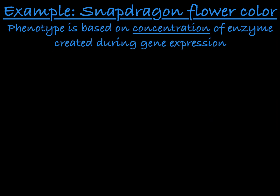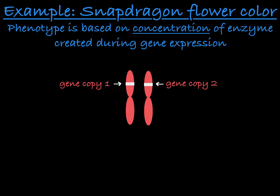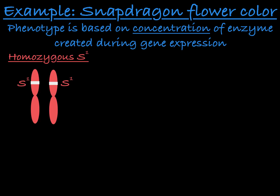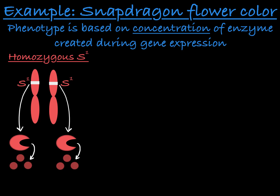So why does this happen? It all has to do with the concentration of protein produced when a gene is expressed. Remember that each plant has two copies of this gene, and both copies are accessed when the gene is expressed. When the snapdragon is homozygous for the S1 allele, it produces functional enzyme from both copies of its gene, and all of this enzyme works to produce red pigment, making the plant's flowers red.